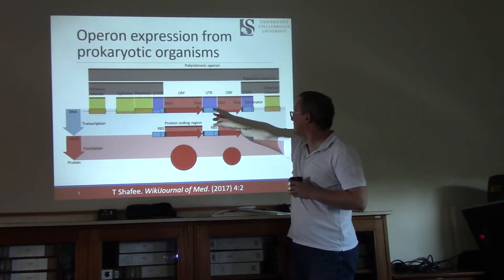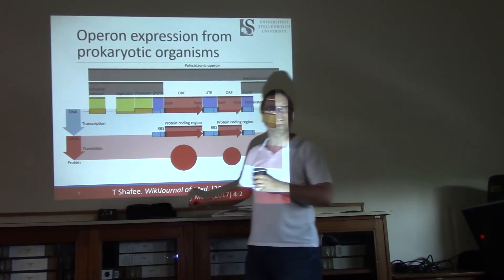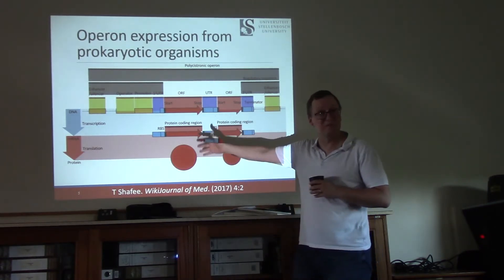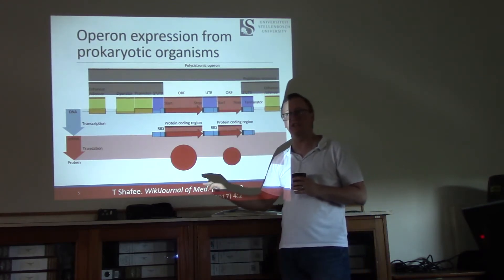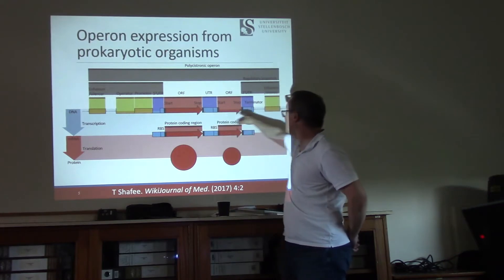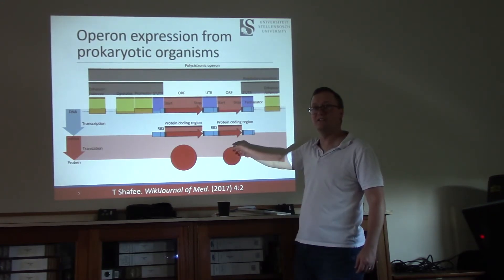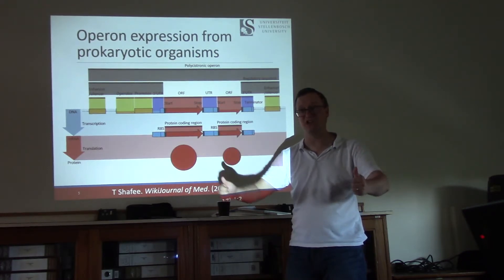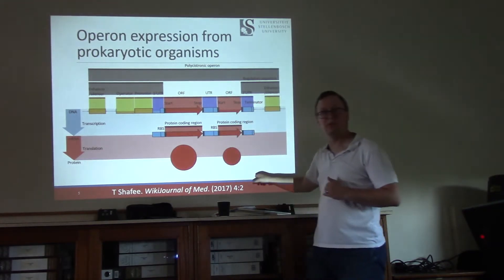So we see in this case two ORFs — open reading frames. We have UTRs, untranslated regions, and ORFs with start and stop sites. Regulation comes from things like promoters, enhancers, and silencers that determine which genes are expressed at a given time. A single transcript is produced and different protein coding regions are marked by RBSs — ribosome binding sites — representing where translation starts. One polycistronic transcript results in multiple proteins.